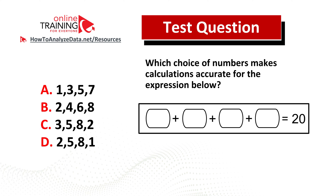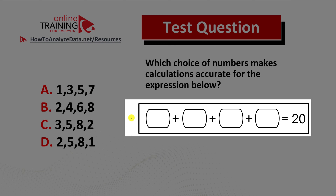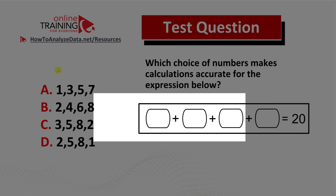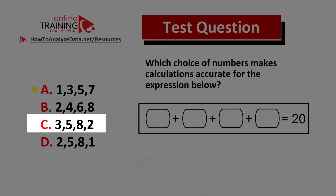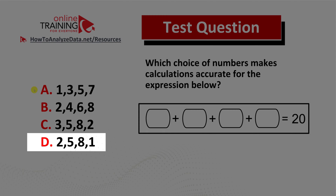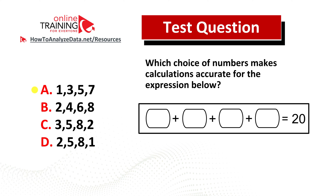Let me share with you a not-so-challenging but frequently seen test question. Which choice of numbers makes calculations accurate for the expression below? You have an expression where four numbers need to be added up to get a result of 20. The four choices are: choice A one three five seven, choice B two four six eight, choice C three five eight two, and choice D two five eight one. Do you think you know the answer? Please try it — pause this video and make sure you can get to the right solution.